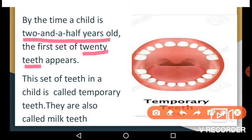Though there is a significant difference between milk teeth and permanent teeth, milk teeth perform certain important functions until the permanent teeth can take over. By the time a child is 2 and a half years old, the first set of 20 teeth appears. Milk teeth help the child bite and chew, which is essential for the child to gain proper nutrition, and they allow the proper development of speech.